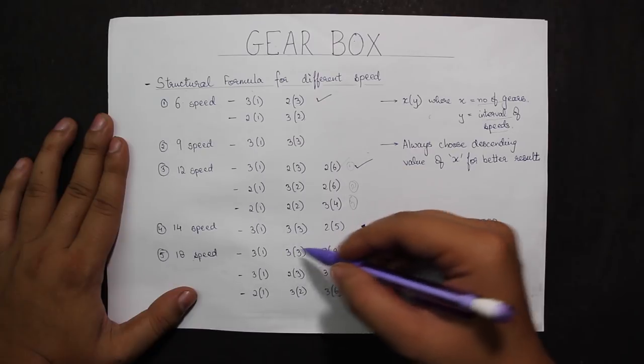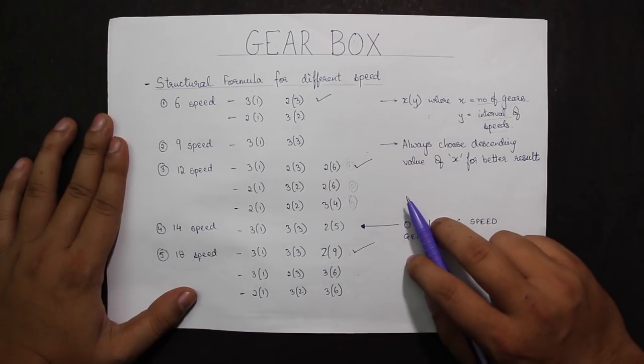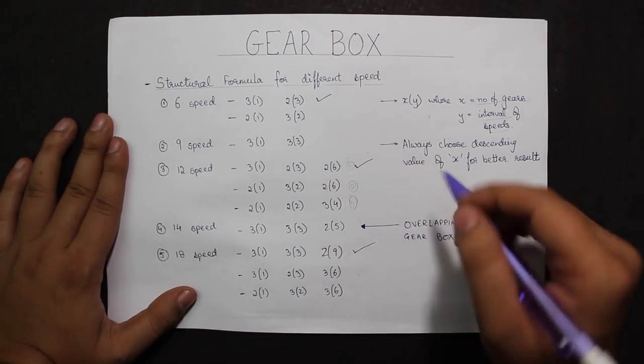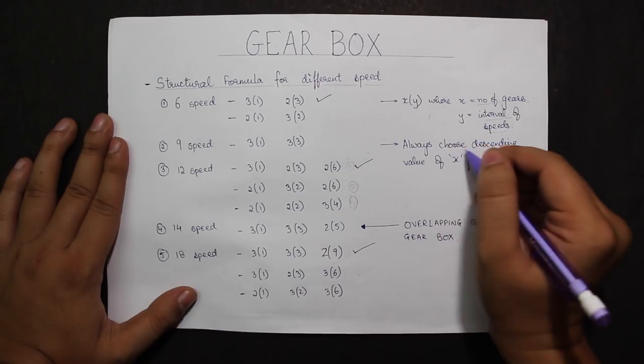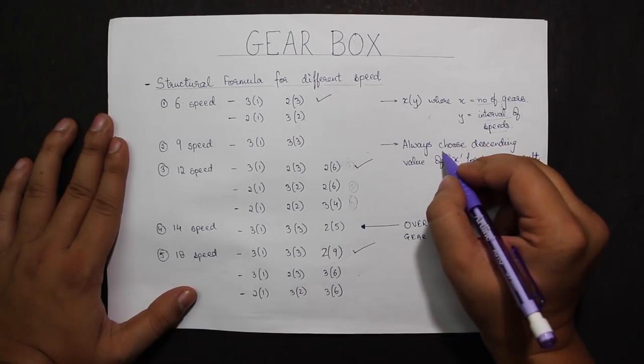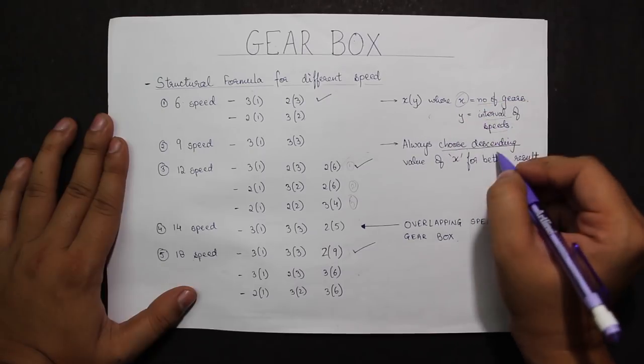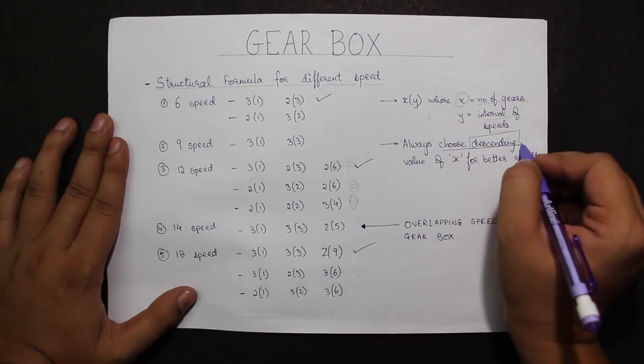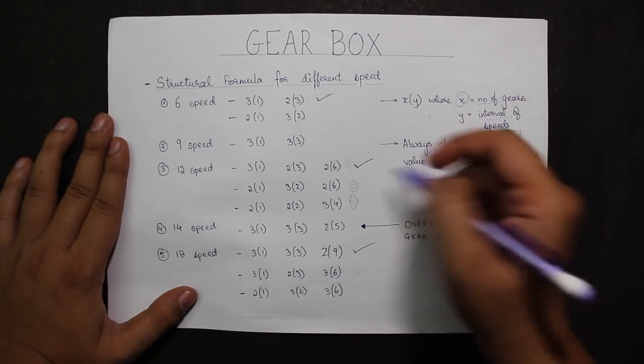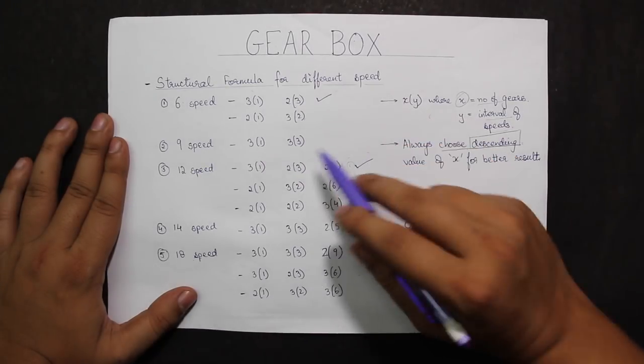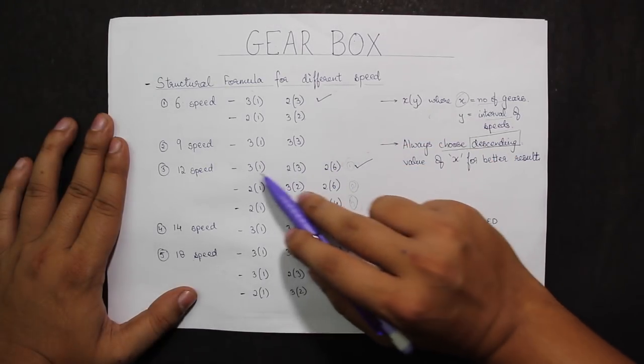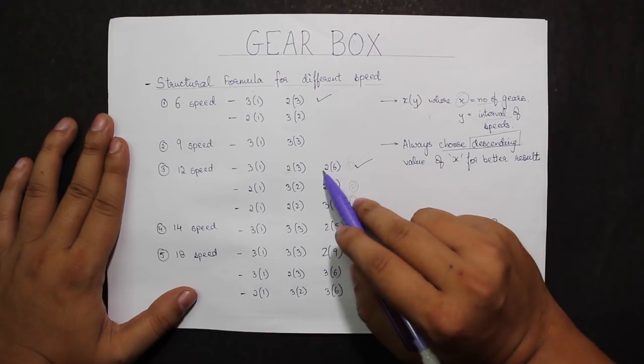According to the rules, the best efficiency we'll get is when the value of X is in descending order. For instance, in the 12-speed gearbox, the value 3-2-2 is in descending order, so I will be choosing this while designing the gearbox unless specified otherwise.